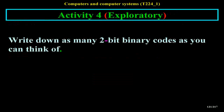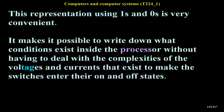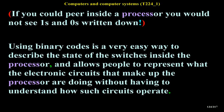Activity 4 asks: write down as many two-bit binary codes as you can think of. There are four possible two-bit binary codes: 00, 01, 10, and 11. This representation using ones and zeros is very convenient — it makes it possible to write down what conditions exist inside the processor without dealing with the complexities of voltages and currents. Using binary codes is an easy way to describe the state of switches inside the processor and allows people to represent what electronic circuits are doing without having to understand how such circuits operate.